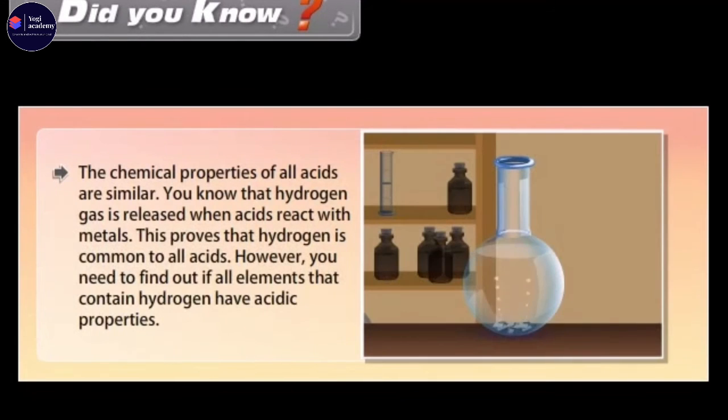The chemical properties of all acids are similar. You know that hydrogen gas is released when acids react with metals. This proves that hydrogen is common to all acids. However, you need to find out if all elements that contain hydrogen have acidic properties.